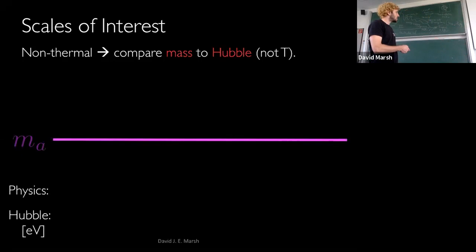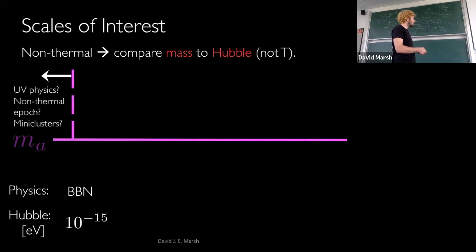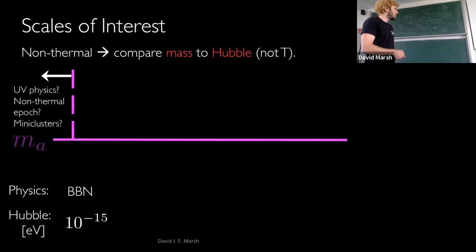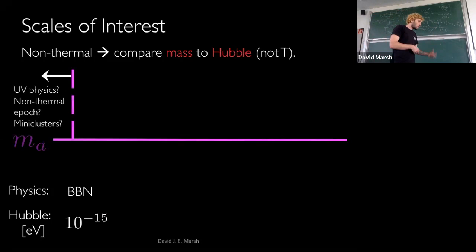At the bottom I'll tell you what physics is going on and what the scale of the Hubble constant is. We're going from left to right, from early times to late times, so the Hubble constant is larger on the left and smaller on the right. The first scale we can nail is Big Bang nucleosynthesis: temperature of one MeV and Hubble parameter about 10^{-15} eV. All scales with Hubble constant larger than this are essentially unknown — inflation could still be going on, there could be a matter-dominated or radiation epoch, subject to uncertainties of UV physics.